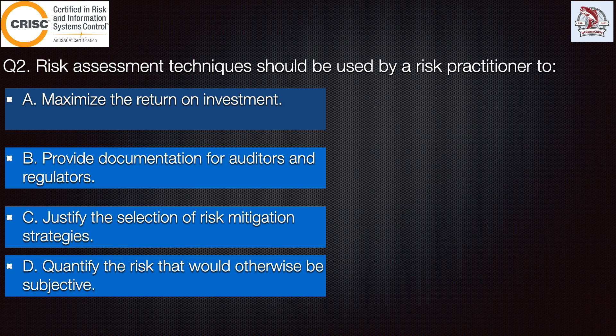The correct answer is Option C: justify the selection of risk mitigation strategies. Option A: maximize the return on investment — this is incorrect because maximizing return on investment may be a risk objective for implementing risk responses, but it is not part of the risk assessment process.